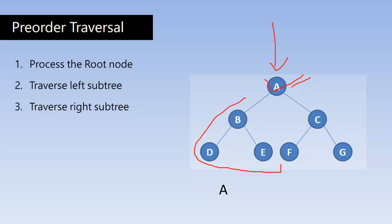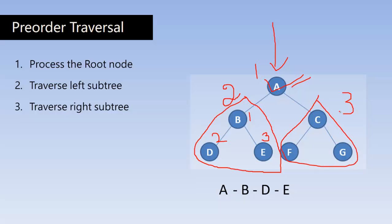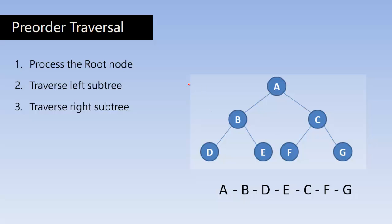Now go to the left subtree. Traversing through the left subtree, we process the root node first. In this left subtree, the root node is B, so process this first. Then go for the left subtree — here, left subtree is D. Process D and then the right subtree E. So A, B, D, E. Now left subtree is over, go for the right subtree. While processing the right subtree, process the root node first, then left subtree, then the right subtree. So this is how we perform pre-order traversal.